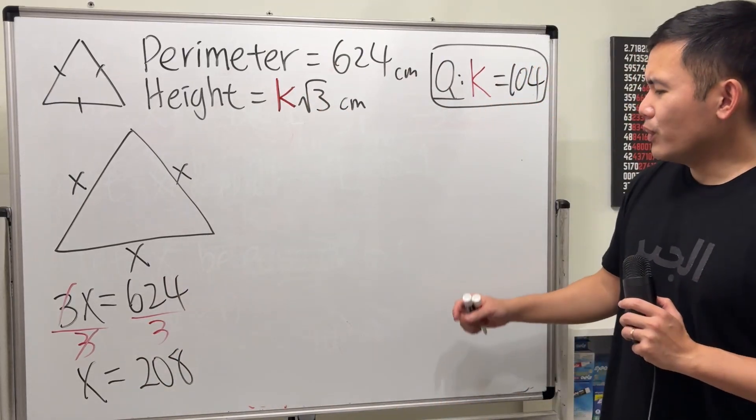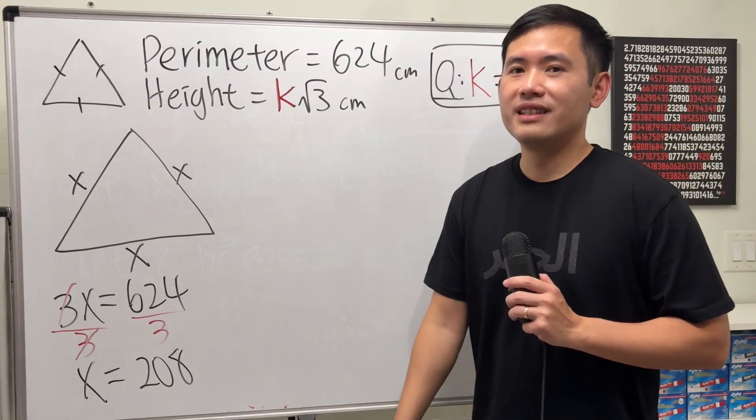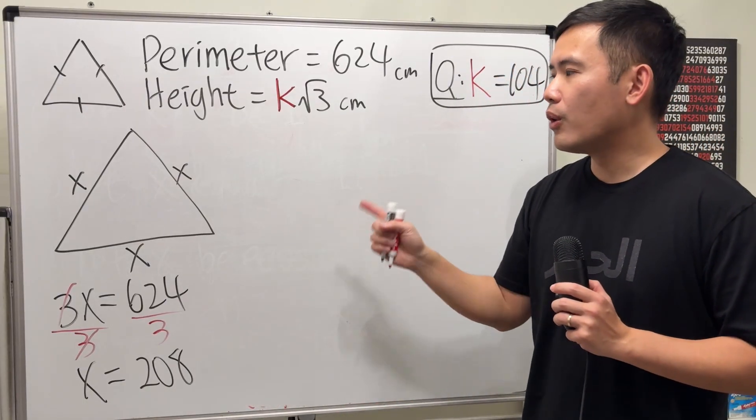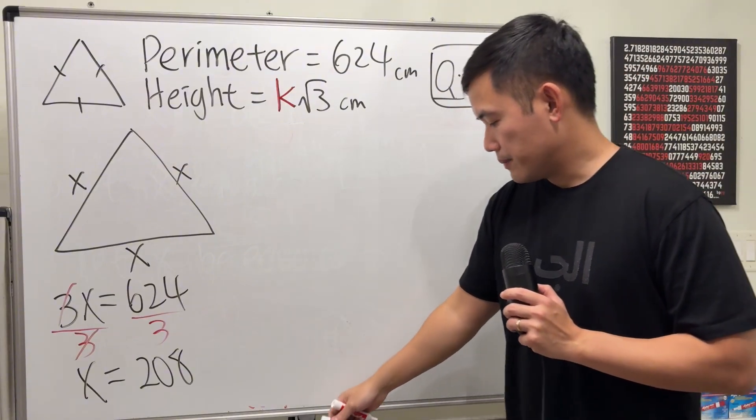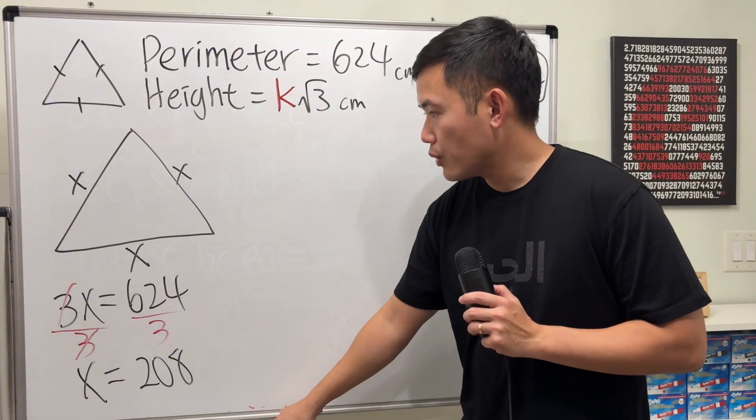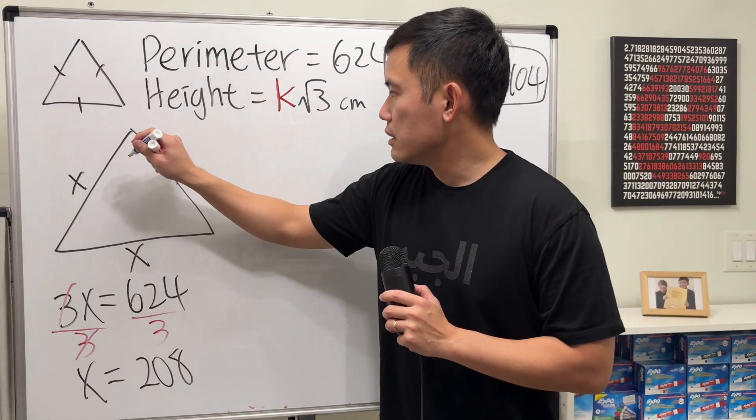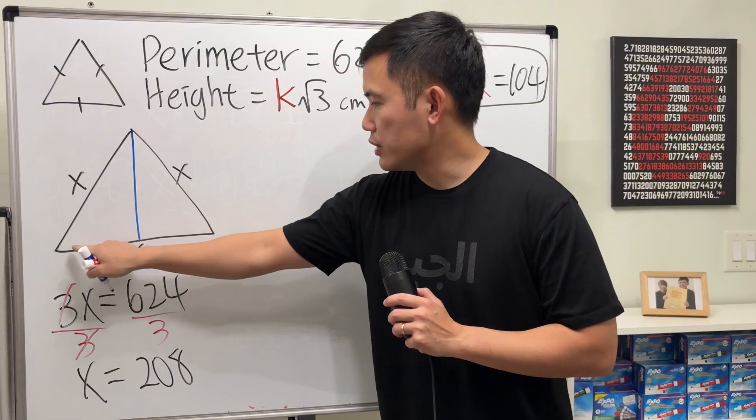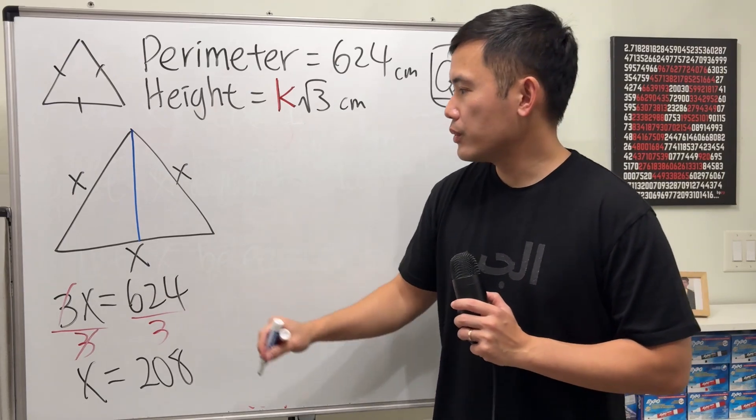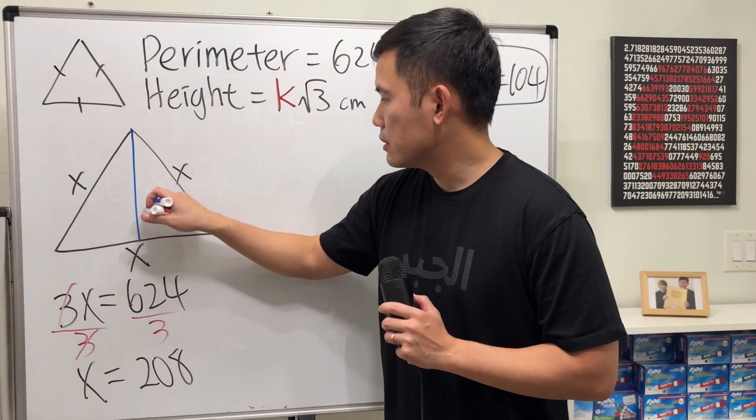And now you might be wondering, k is just a half of it. That is actually correct for all equilateral triangles. Here is the deal. Whenever we have an equilateral triangle, the height goes from this vertex down here. Here, if we take this for the base, I will tell you the height right here.